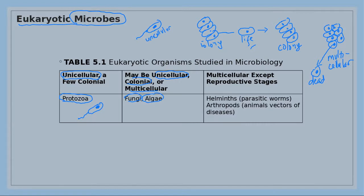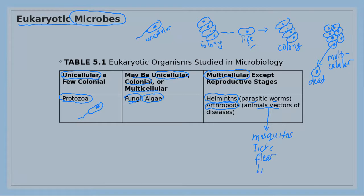The multi-cellular organisms we will learn in this class are mostly helminths, which are parasitic worms, and some fungi. We will also learn about a group of animals called arthropods — these carry disease, such as mosquitoes, ticks, fleas, and lice — which transfer disease from one organism to another.